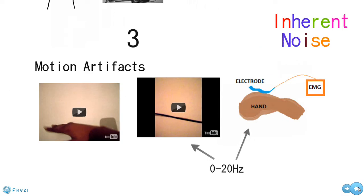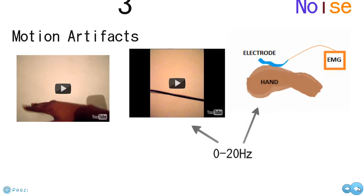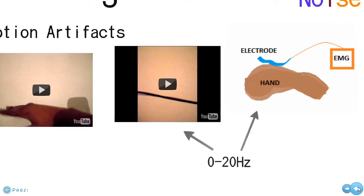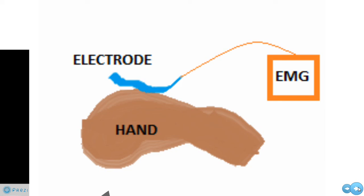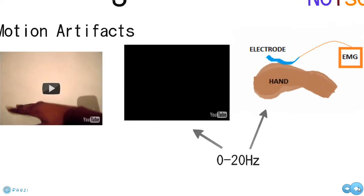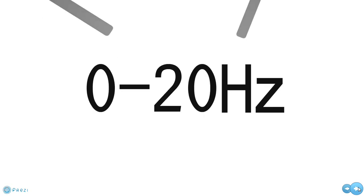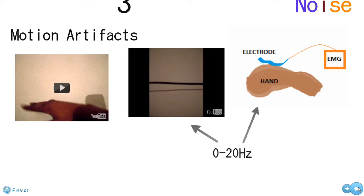Motion artifacts can also generate unwanted signal. This can be due to the electrode and skin contact, a phenomenon known as impedance, or wire movement. Both impedance and wire movement are in the region of 0 to 20 hertz. In a slightly subtler way, motion artifacts can be caused by a patient moving during a recording.